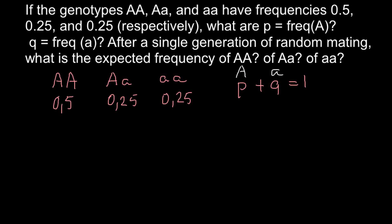How are we going to find the allele frequencies? This is very easy. We have to take the frequency of the homozygous dominant genotype and add to it half the frequency of the heterozygous genotype, because the heterozygous genotype has half dominant alleles and half recessive alleles. The answer here would be: the frequency of the dominant allele A equals 0.625.